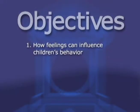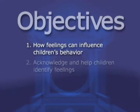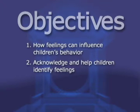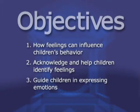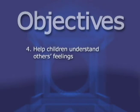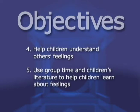Let's take a look at our objectives for this segment. First, we'll discuss how feelings can influence children's classroom behavior. Next, we'll describe ways to acknowledge and help children identify their feelings. We'll explain how to guide children in expressing emotions in positive ways. We'll describe strategies for helping children understand others' feelings and how their behavior affects those feelings. And finally, we'll discuss how to use group time activities and children's literature to help children learn about feelings.